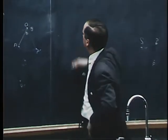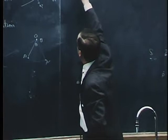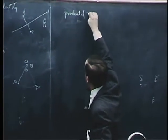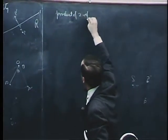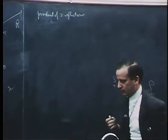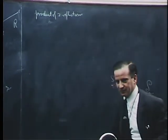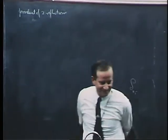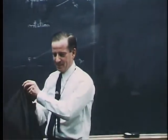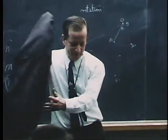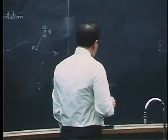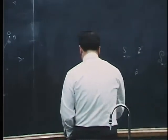Reflection, translation, rotation, glide reflection — I have described four different kinds of isometries. But are these the only kinds of isometries? For example, is a product of a translation and a rotation one of these four types? Even simpler, what sort of isometry is obtained by taking the product of two reflections?